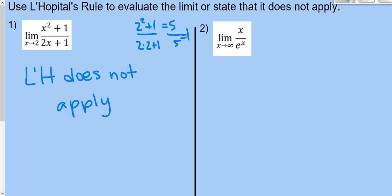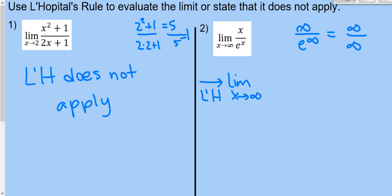Problem 2: the limit as x→∞ of x/e^x. Plugging in infinity: ∞/e^∞ = ∞/∞, so L'Hôpital's rule applies. Marking this with LH, we take the derivative of the top — 1 — over the derivative of the bottom — e^x. Now plugging in infinity: 1/e^∞ = 1/∞, which is essentially 0. The limit is 0.